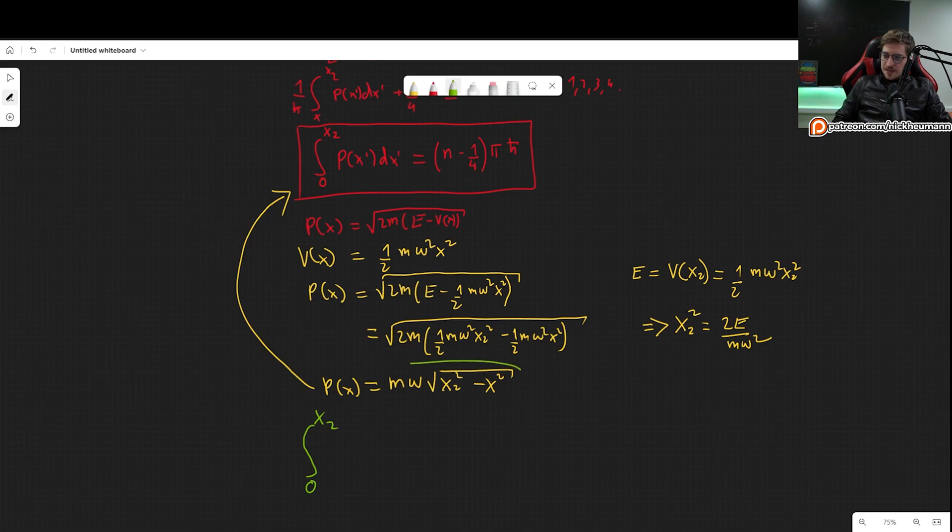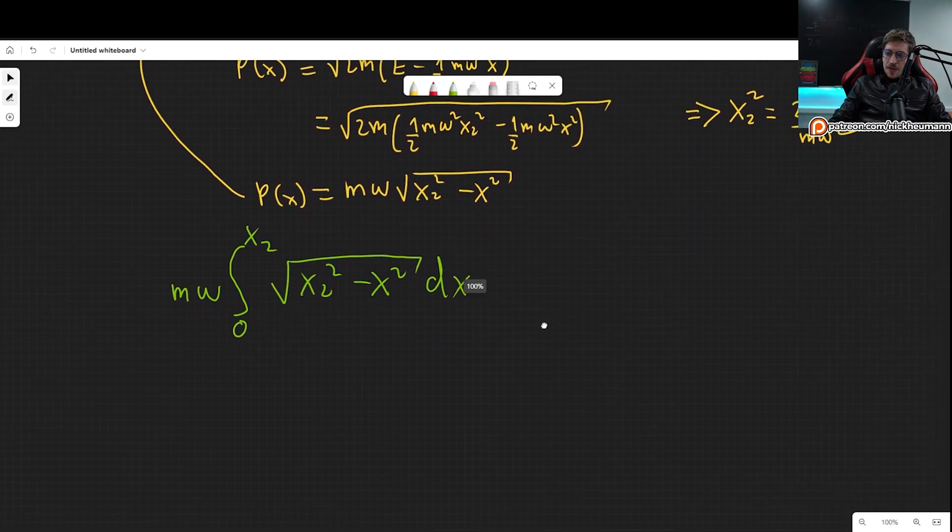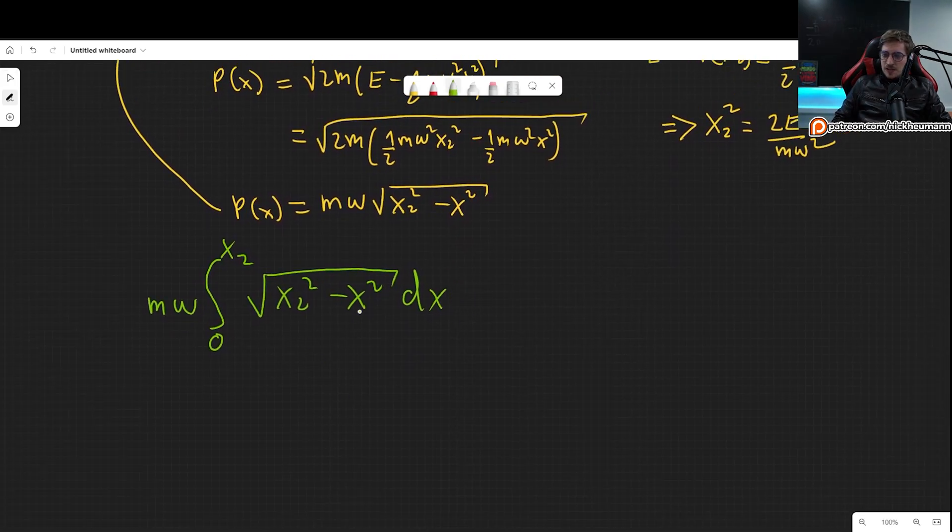So we will take this, plug it in there. So by doing that, we get integral from 0 to x2, and then let's put this inside. So we get m omega, which we can take out of the integral, square root of x2 squared minus x squared and then dx.